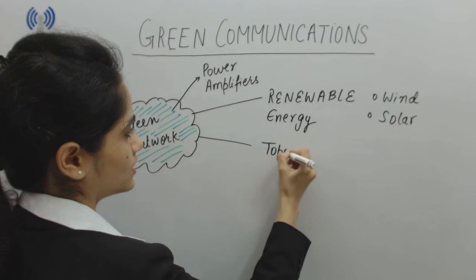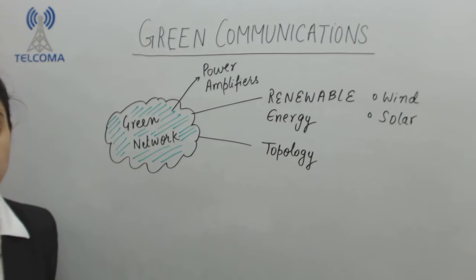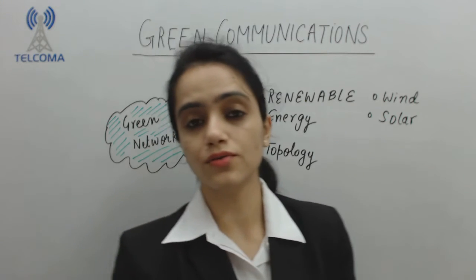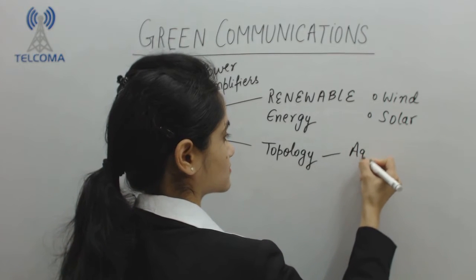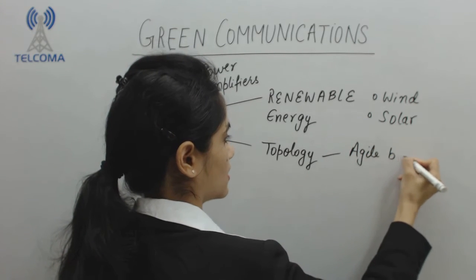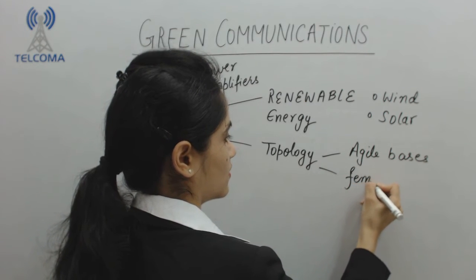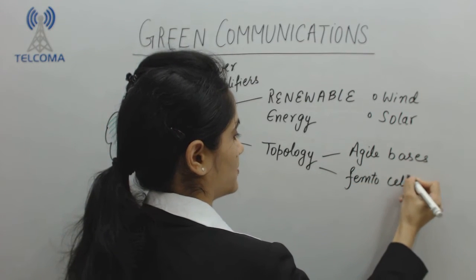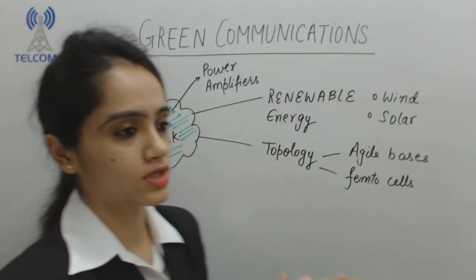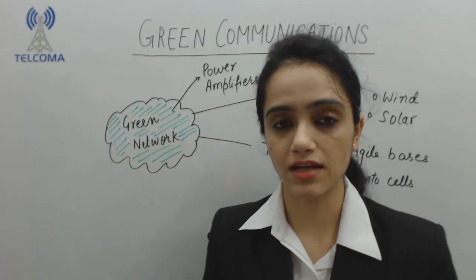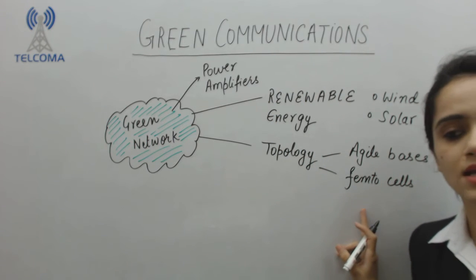As per the topology of a green network, we are going to use an agile basis. Next, we will use femto cells — that means a smaller cell network. In the topology of the network architecture, we use an agile and flexible basis along with femto cells.